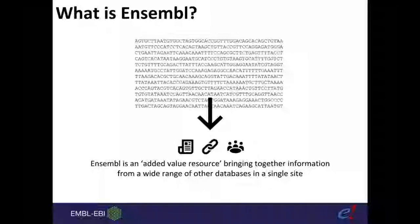We think of ourselves as an added-value resource, bringing together information from a wide range of other databases — many from the EBI — condensed into a single site. If you look for a gene or location of interest in Ensembl, you'll see not only our own gene annotations but also information from other relevant databases, such as where that gene is expressed, which pathway it's involved in, literature citations, and more. We aim to be a one-stop shop for genome browsing.